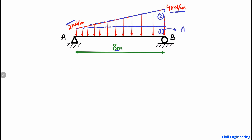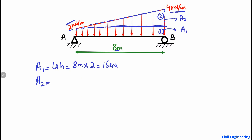First we will find the area A1 of the rectangle, then the area A2 of the triangle, because we need to find the total load acting on this beam. The trapezoidal load is not straightforward, so we use this method. Area A1 is the rectangular load: length × height = 8 m × 2 kN/m = 16 kN.